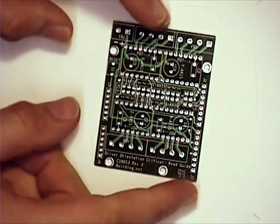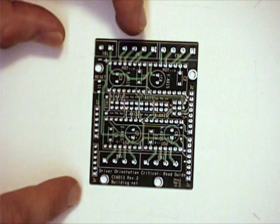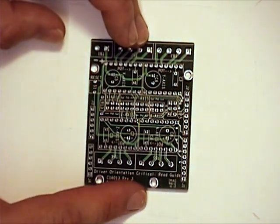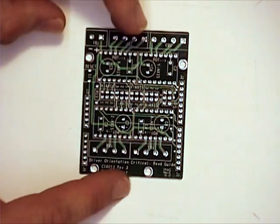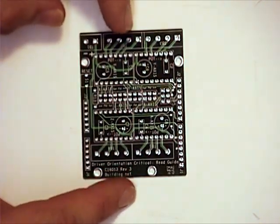So on the whole, the cost on this, if you're willing to put it together yourself, you are going to save a few bucks compared with the Grbl shield. You've got more capacity for 4-axis instead of 3.